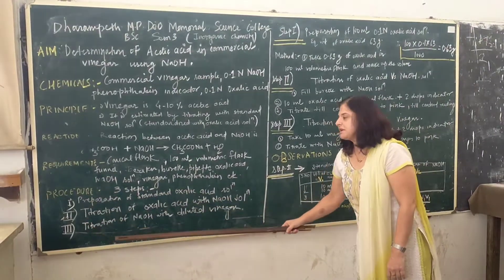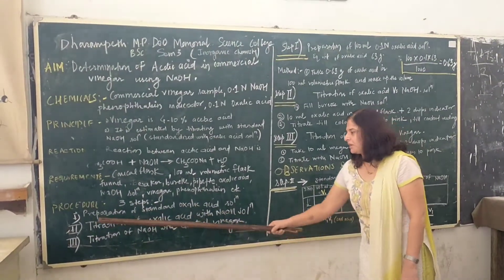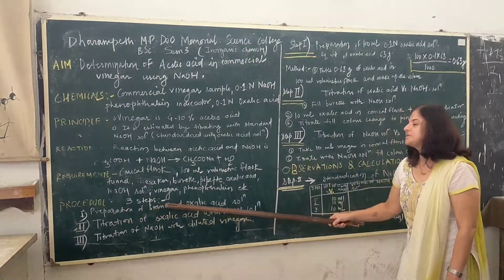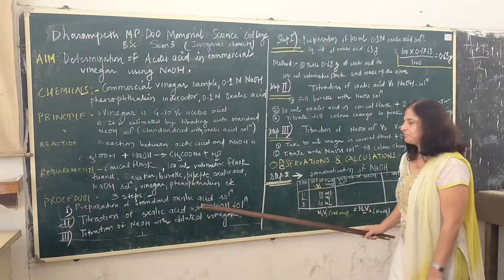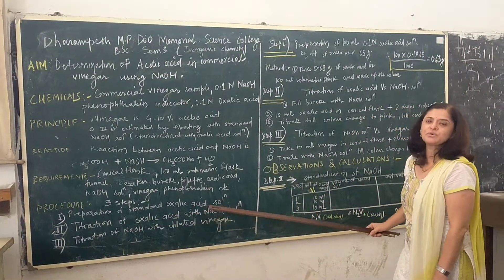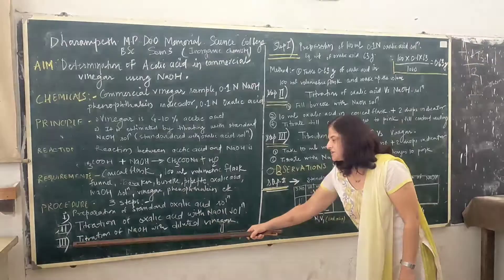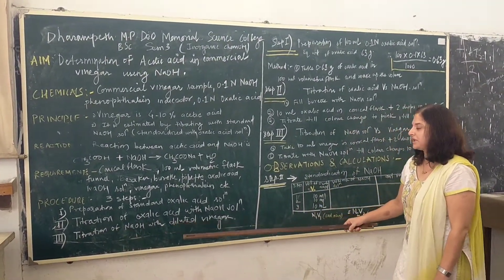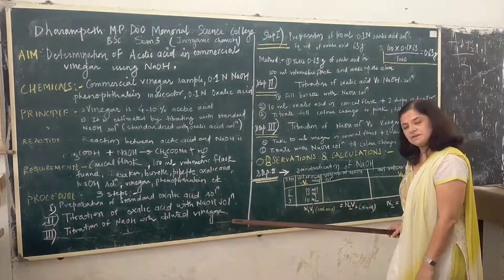The procedure involves three steps. The first step is preparation of standard oxalic acid solution. The second step is the titration of oxalic acid with sodium hydroxide solution. And the third step is the titration of sodium hydroxide with diluted vinegar solution.